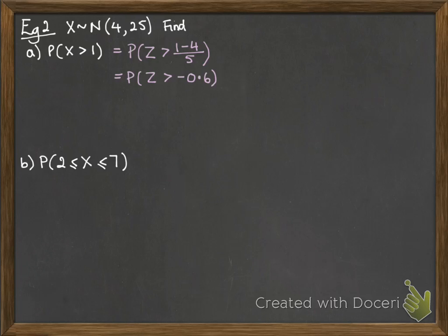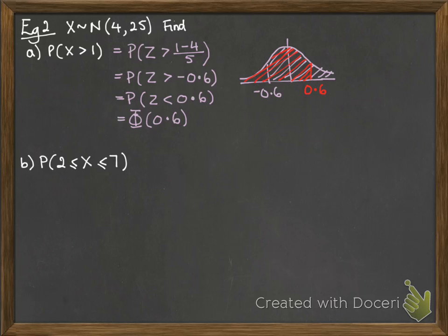So we're looking for z being greater than 0.6. Now remember, our z tables only give us a less than or equal to value, not a greater than. So we need to just figure out what that would be equivalent to. So that's the area that it's representing. This would be the same as if we did less than 0.6. And we look that up on the tables and we get 0.726.